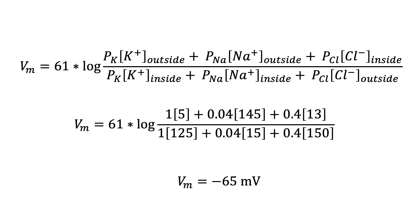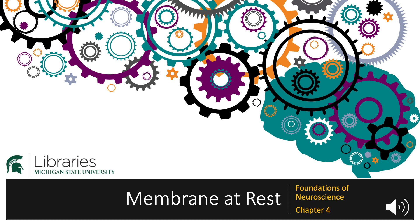Then the intracellular and extracellular concentration values of each ion are needed. Note that since chloride is a negative ion, the inside concentration is in the numerator and the outside concentration is in the denominator, opposite of potassium and sodium. With the concentration and relative permeability values that we have, the calculated resting membrane potential would be negative 65 millivolts.